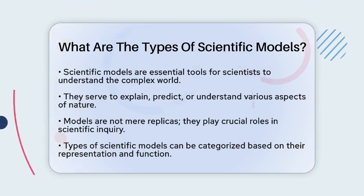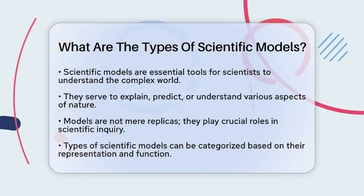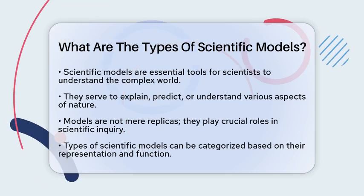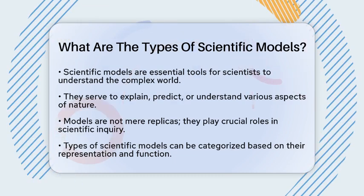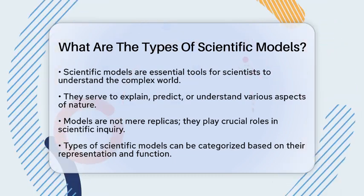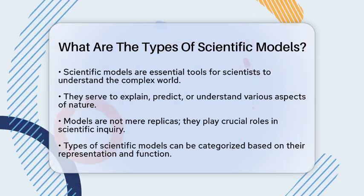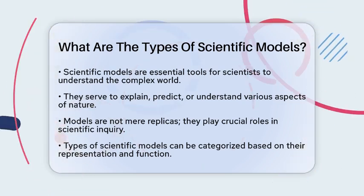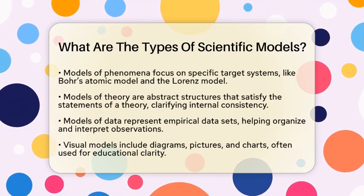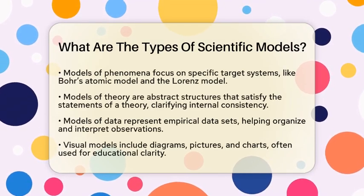First, we have models of phenomena. These models focus on specific parts of the world, known as target systems. For instance, Bohr's atomic model illustrates the structure of an atom, while the Lorentz model explains atmospheric behavior. These models aim to capture the essential features of the phenomena to help us understand and predict their behavior.